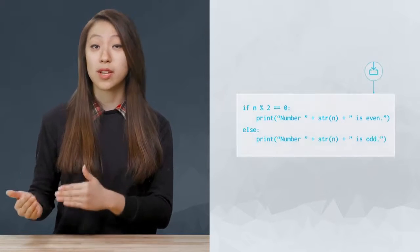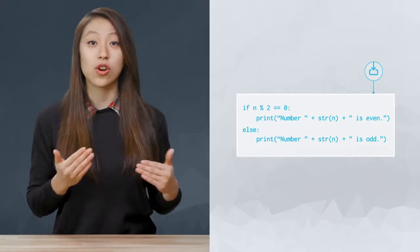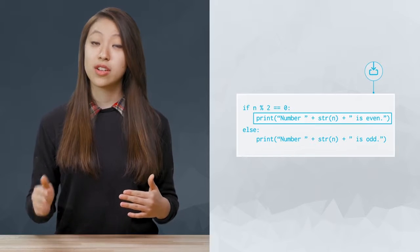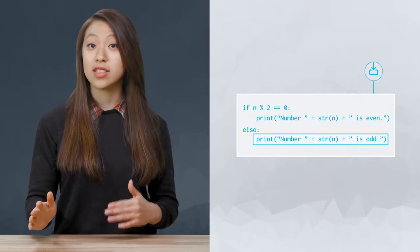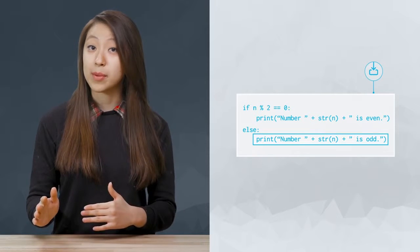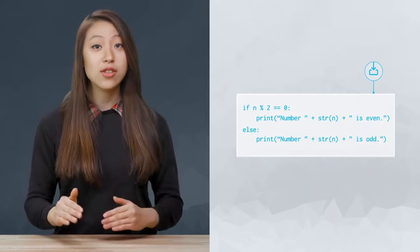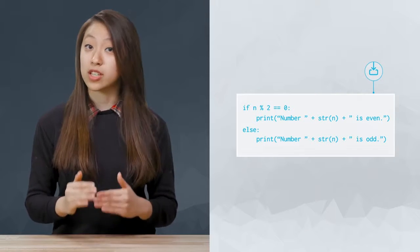Consider this code which prints a message indicating whether an integer n is even or odd. If n is even, this line is run. Otherwise, this line is run. Code indented under the else is what happens when this condition evaluates to false. The else keyword is always followed by a colon and doesn't need a boolean expression.